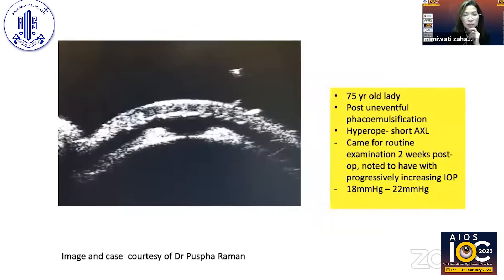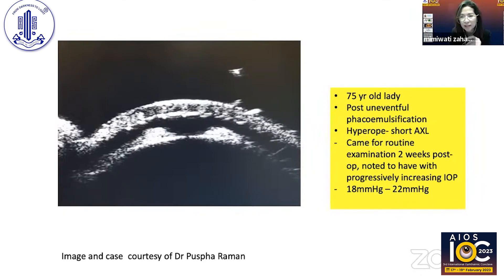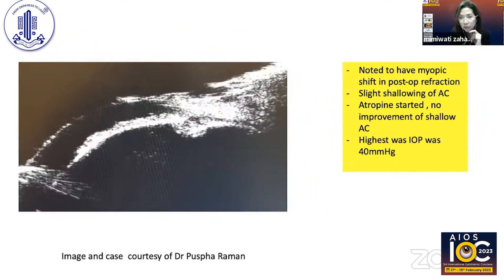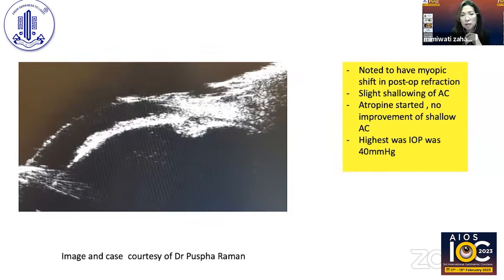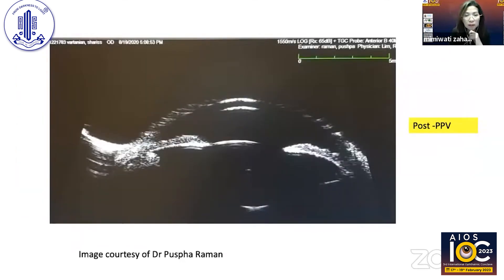A second case shared by Dr. Puspharraman: a 75-year-old hyperopic lady with short axial length who underwent uneventful phacoemulsification — not known to have glaucoma. On routine post-op examination, IOP was progressively increasing (18, 22, 25, 28 mmHg) with gradual shallowing of the anterior chamber. She was started on atropine for two weeks, monitored every few days, but IOP kept climbing to a maximum of 40 mmHg. She was therefore posted for PPV — which deepened the anterior chamber nicely post-operatively.